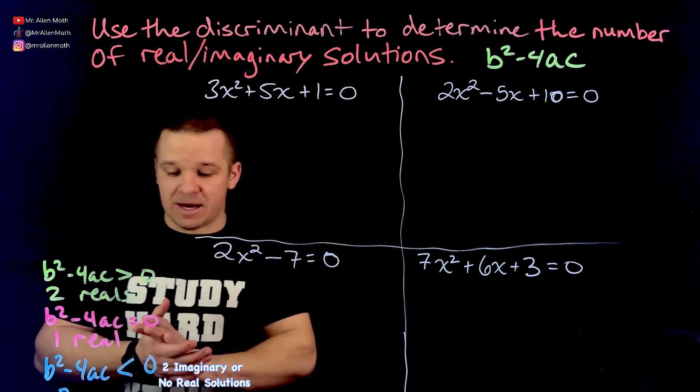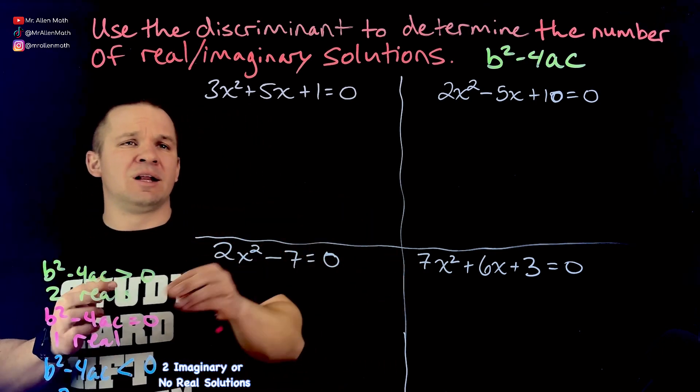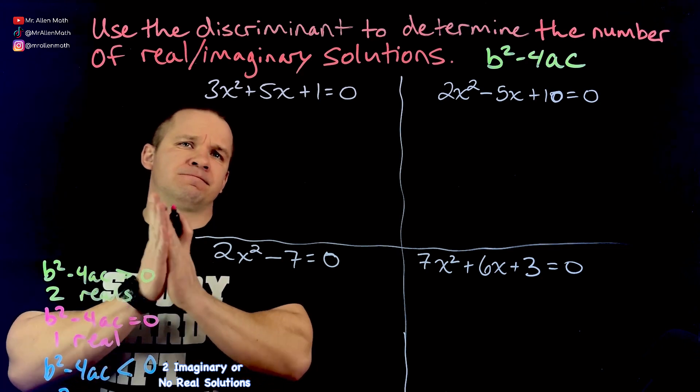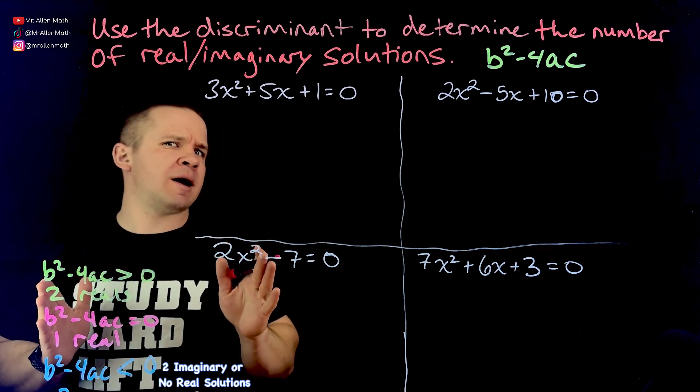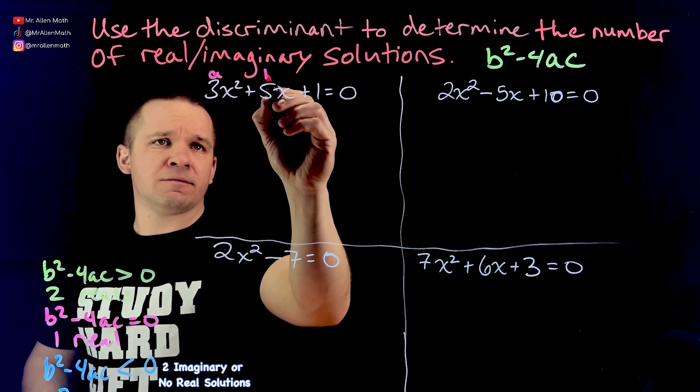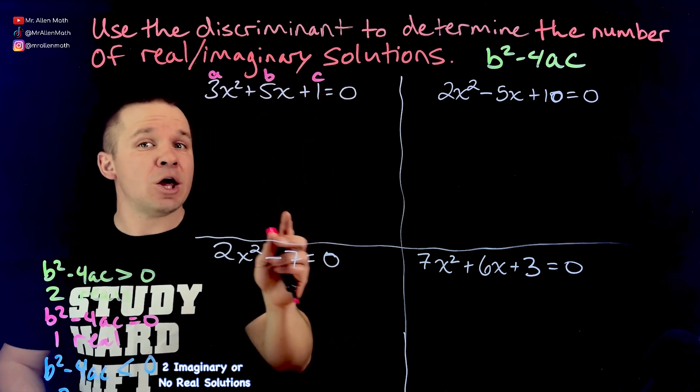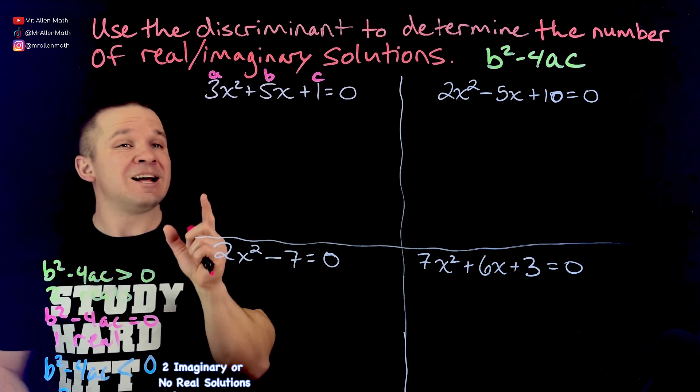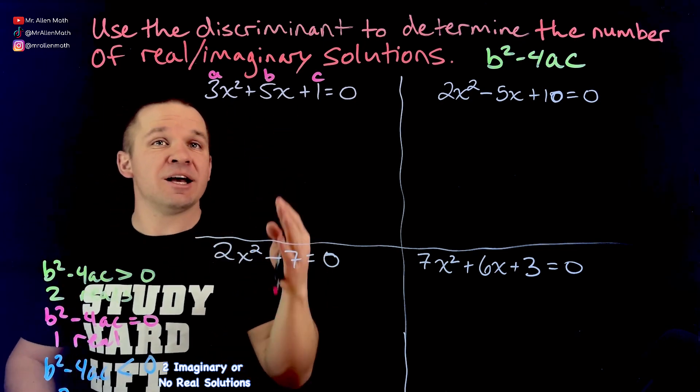All right. So let's get after this thing. So what are my A, B, and C? Well, this is my A, that's my B, and that's my C. The coefficients, not the X squared and the X. It's just the numbers.